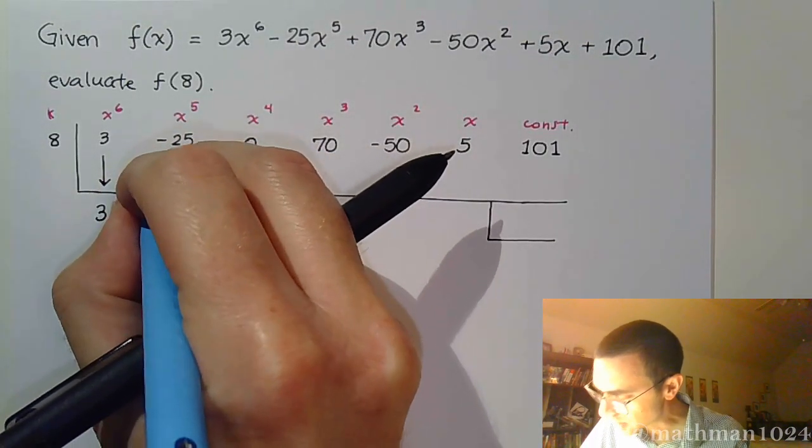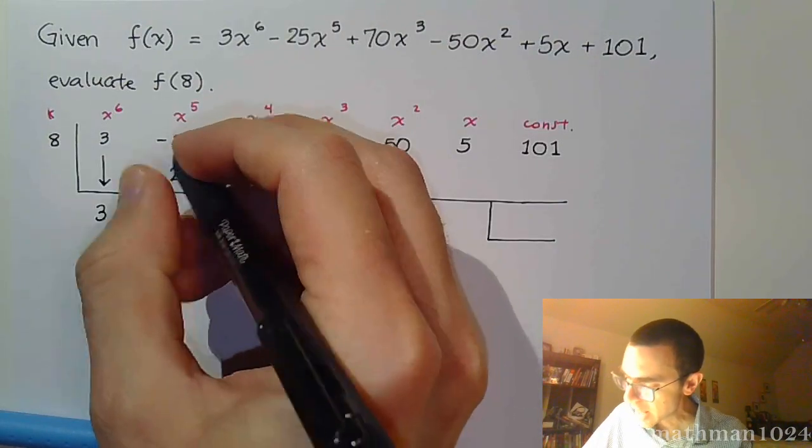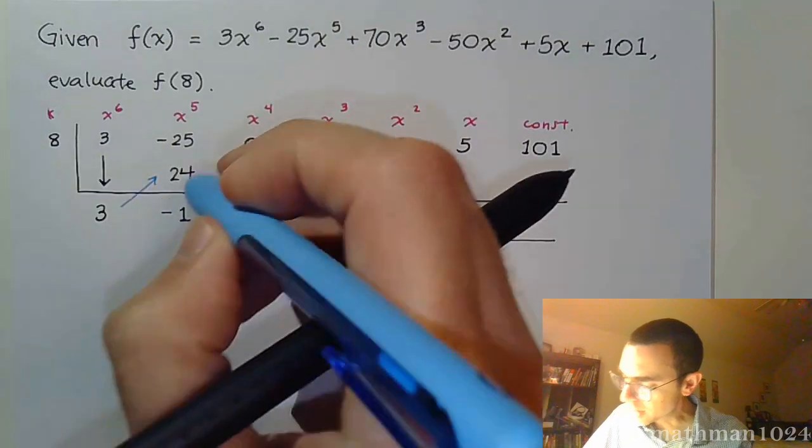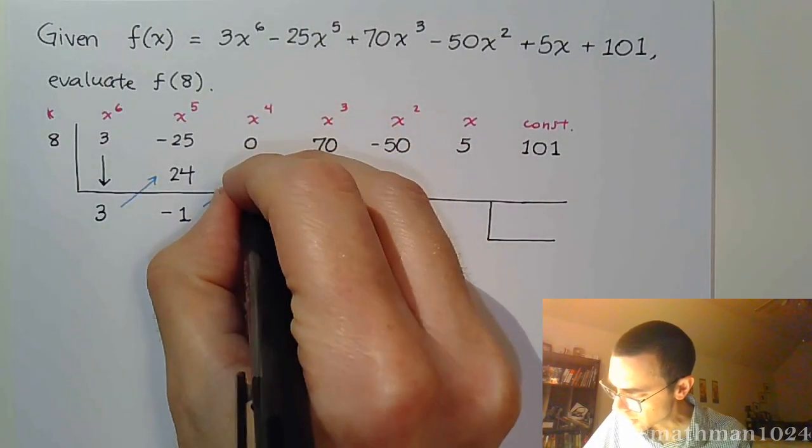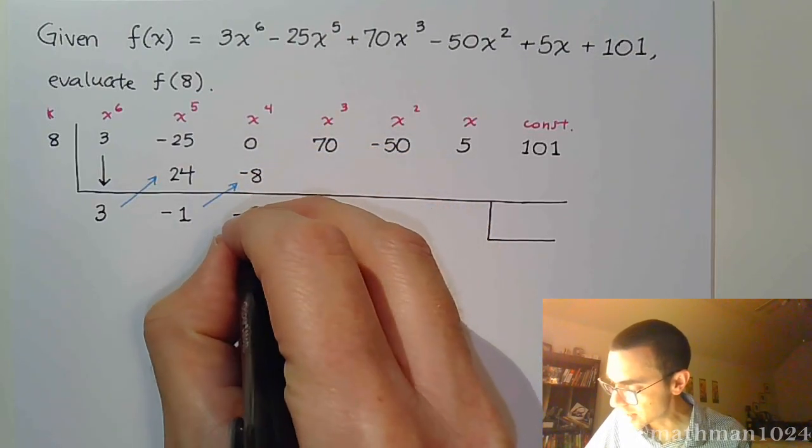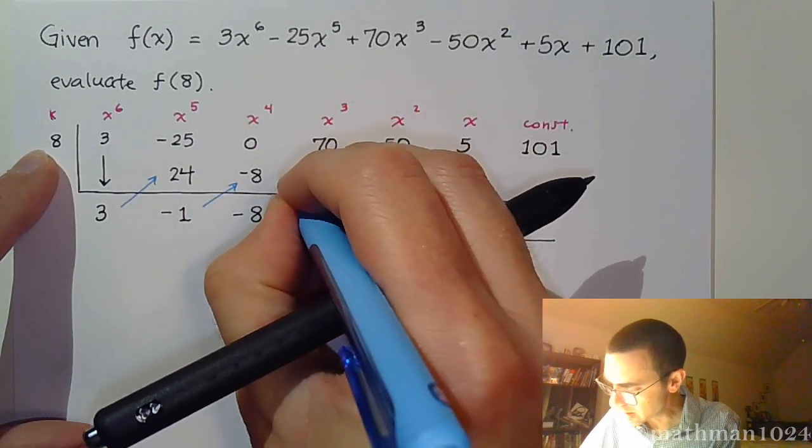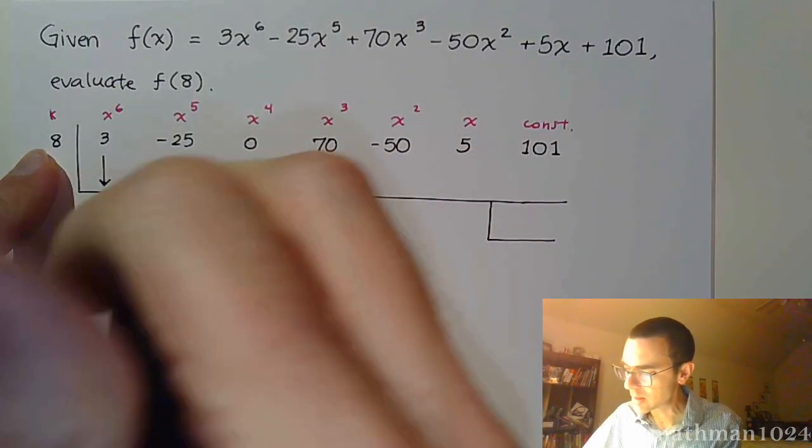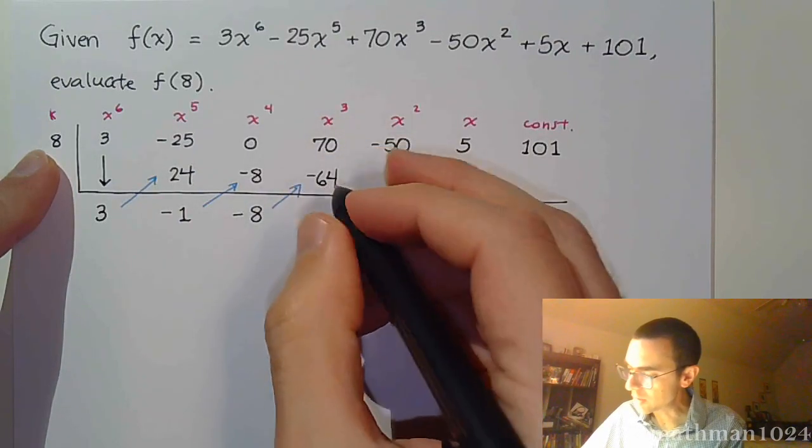So, multiply times that k value, I get 24. Add, and I get negative 1. Multiply times the k value again, we get negative 8. 0, plus negative 8 is negative 8, times k. So, we get negative 64. Combine these guys, we get positive 6 times 8 is positive 48.